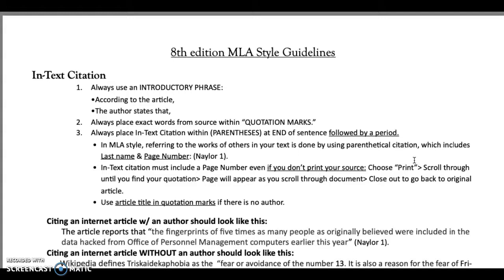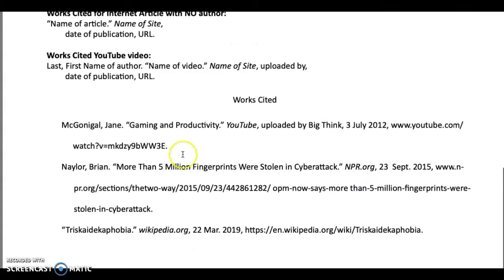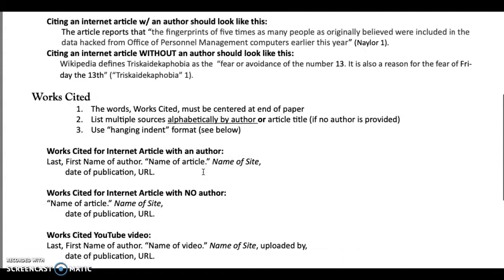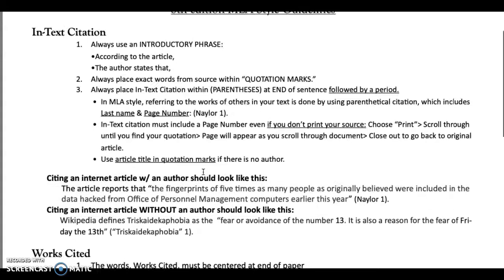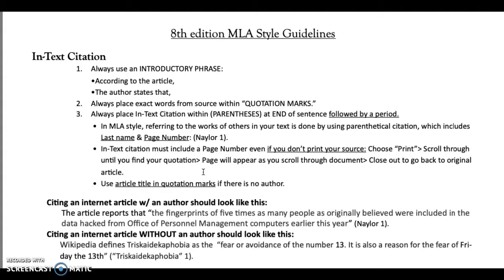Now in MLA citation style, there are two things you need to do: there's your in-text citation, which is what goes in your paper, and then your works cited, which goes at the end. Notice this hanging indent — you're going to have to play around with that in the ruler to get that right. Let's start out with your in-text citation. Your in-text citation needs three things: an introductory phrase, your exact words in quotation marks, and your citation at the end of your sentence. If your quotation is at the beginning of your sentence, don't put your author last name and page in the middle — always put it at the end.